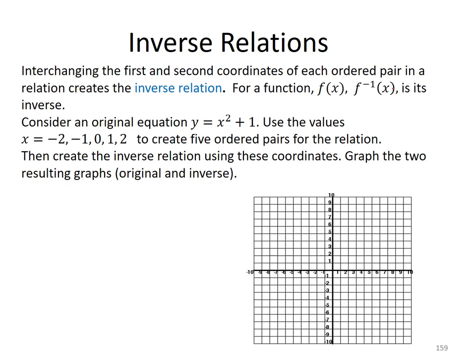Consider an original equation y equals x squared plus 1. Use the values x equals negative 2, negative 1, 0, 1, and 2 to create five ordered pairs for the relation. Then create the inverse relation using these coordinates. Graph the two resulting graphs, the original and the inverse.